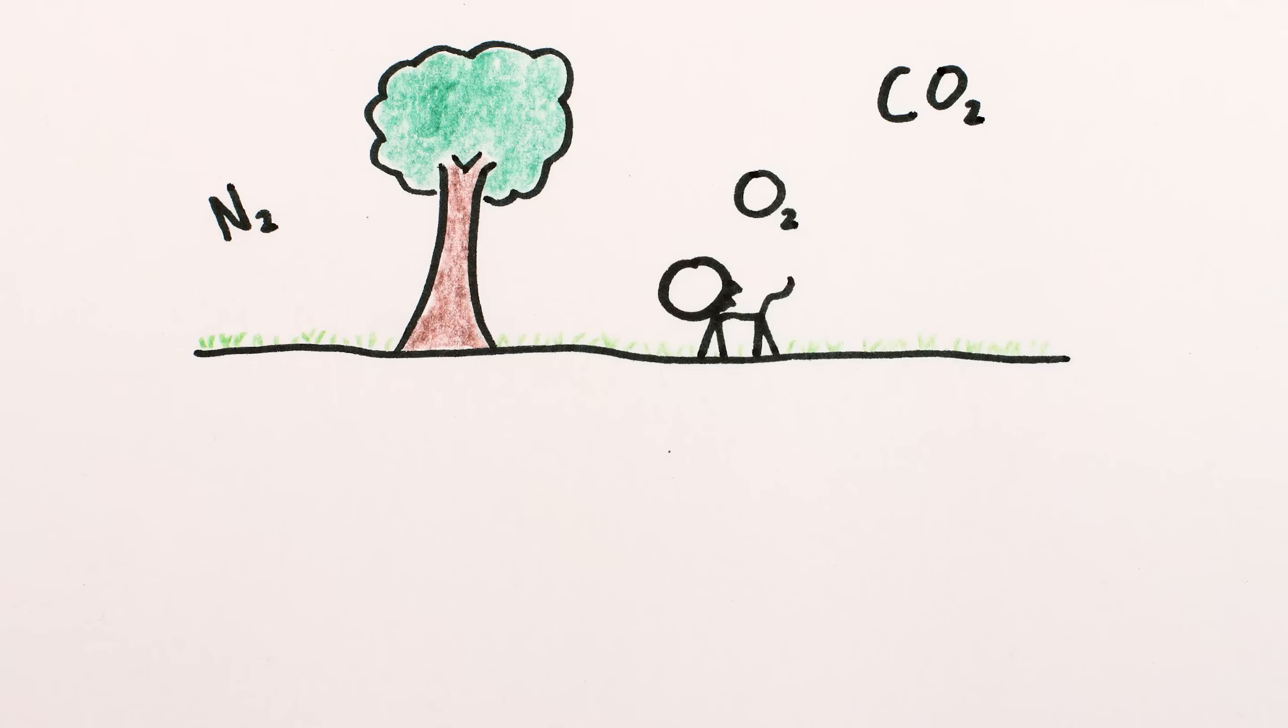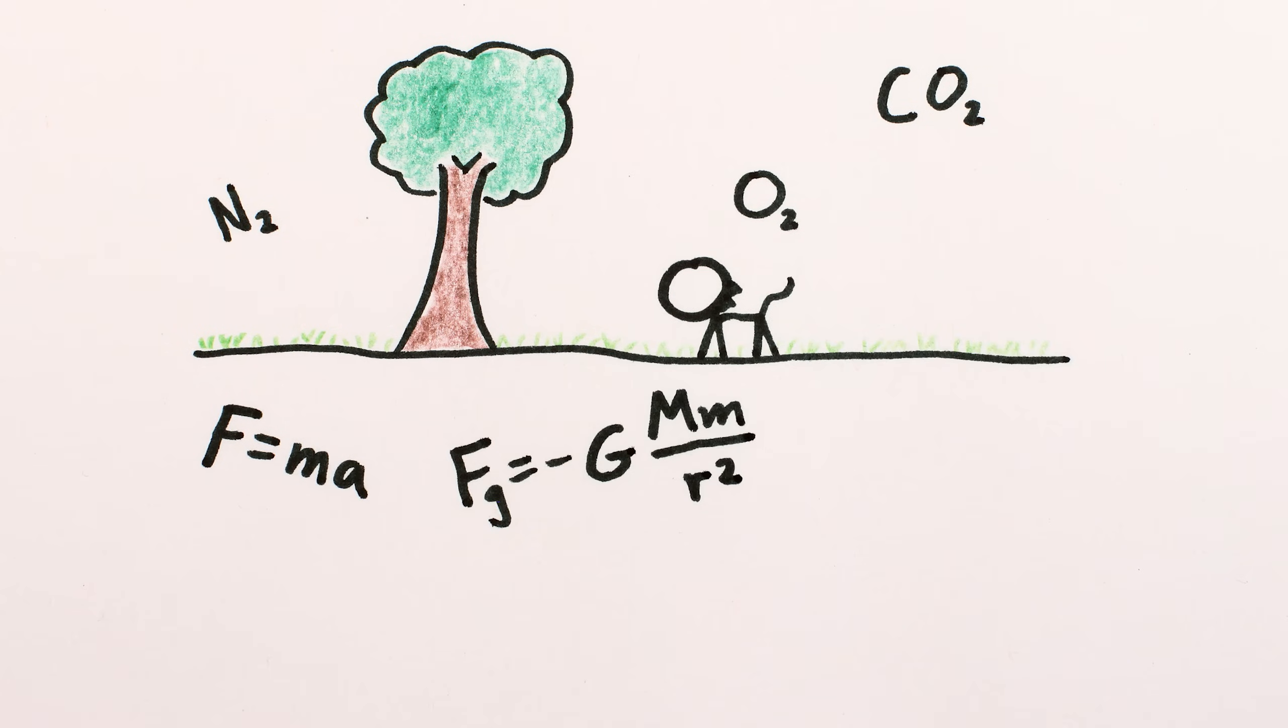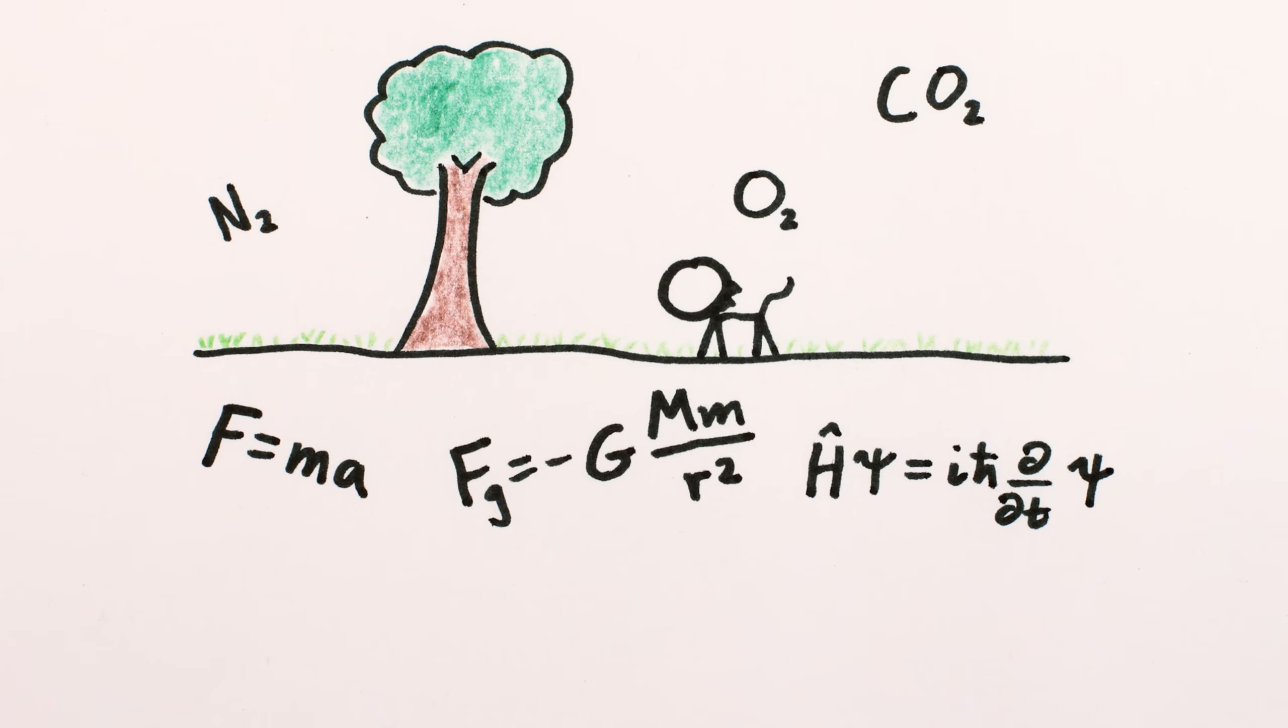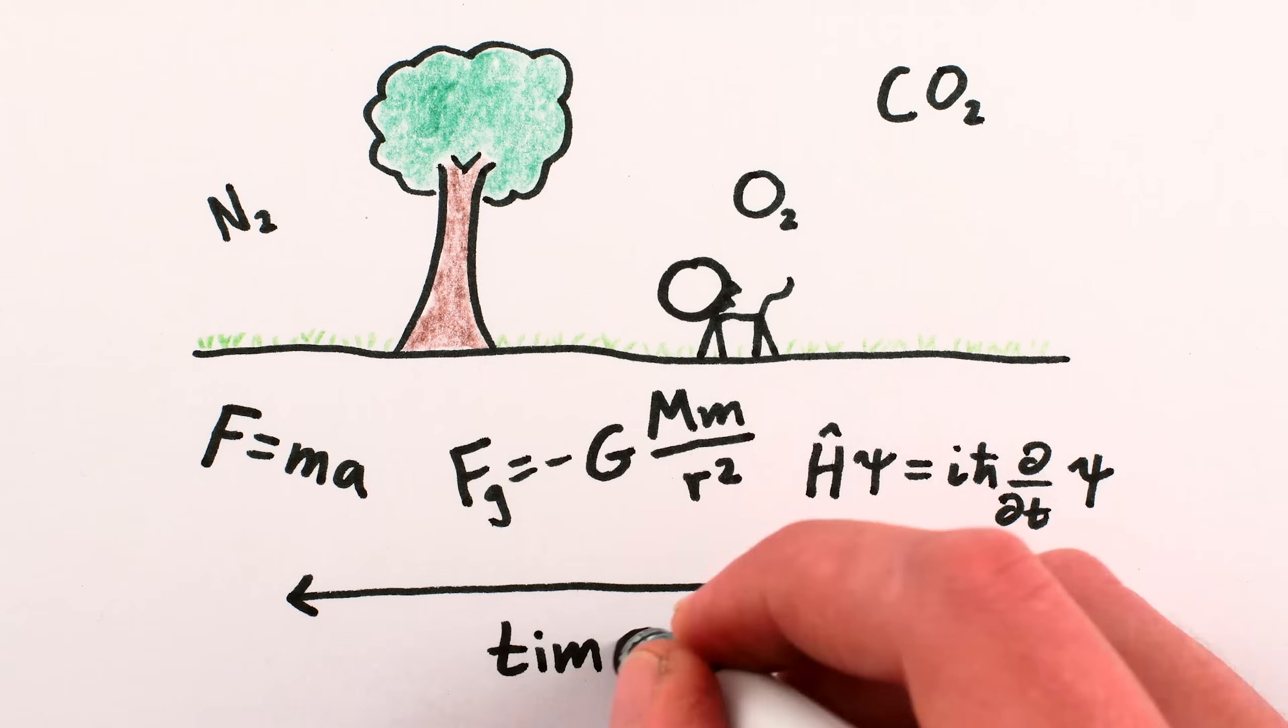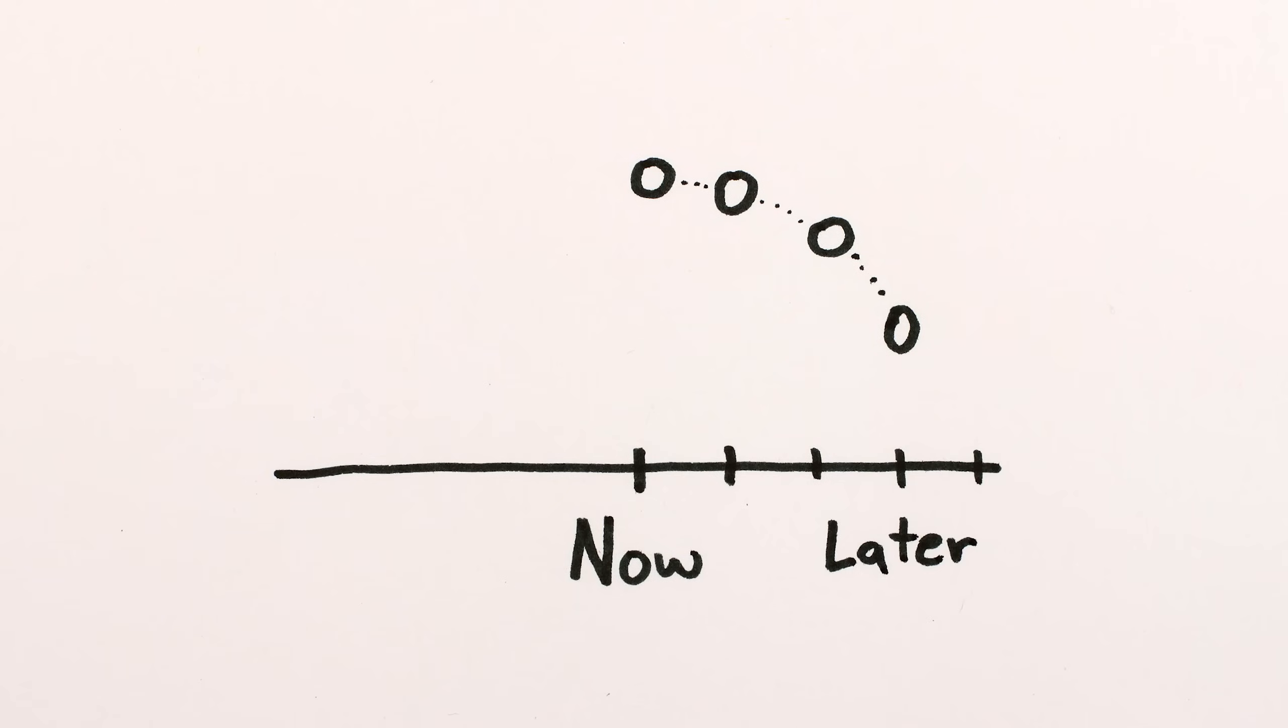The basic laws of physics, things like F equals MA, gravity is inversely proportional to the distance squared, Schrödinger's equation, and so on, don't say anything about the direction of time. Sure, they relate what's going on now to what happens next and to what happened previously, but there's no distinction between forwards and backwards in time.